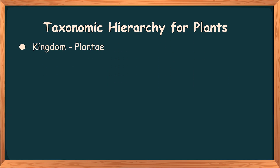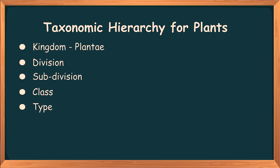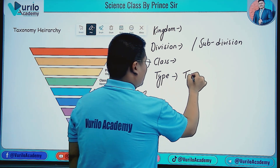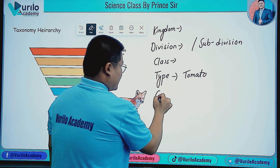For plants, the hierarchy differs slightly: instead of Phylum, we write Division. So for plants it is: Kingdom, Division (not Phylum), Class, Order, Family, Genus, and Species. Sub-division can also be written. Examples include common names and scientific names such as tomato. Genus and species together form the scientific name.